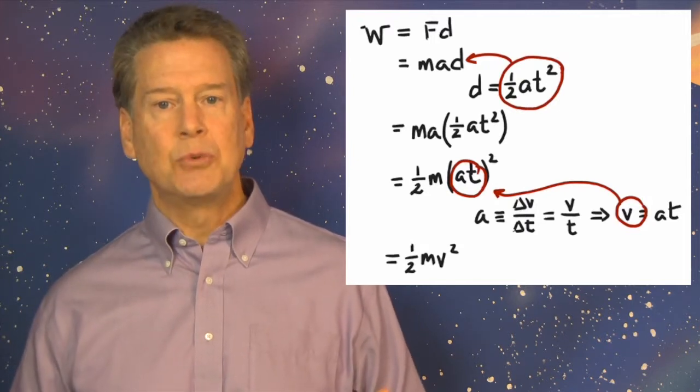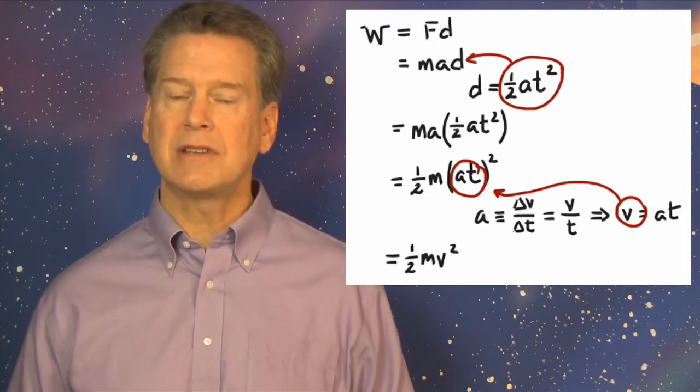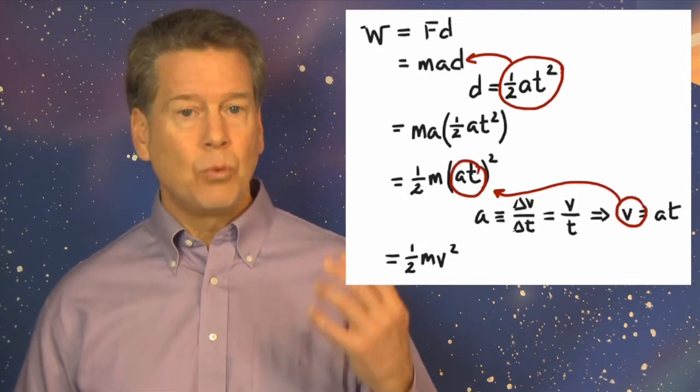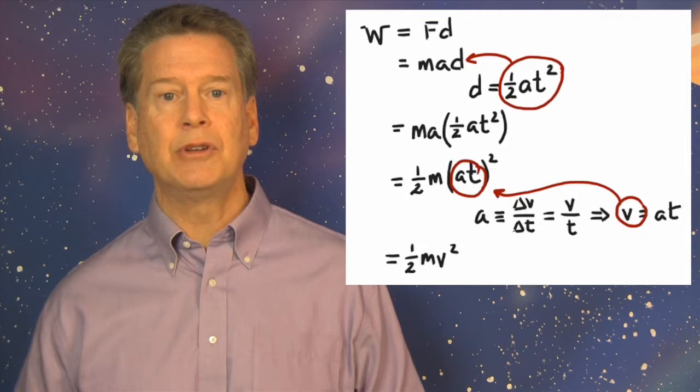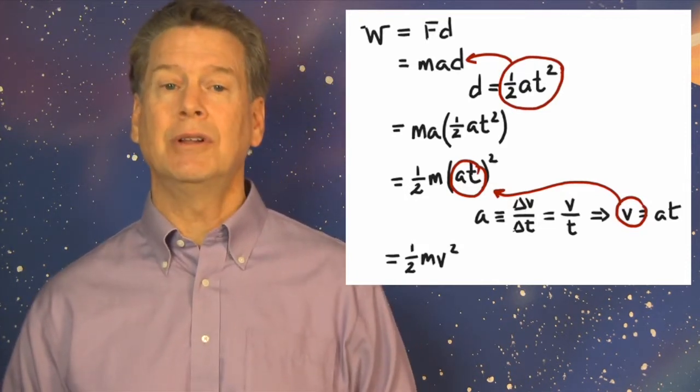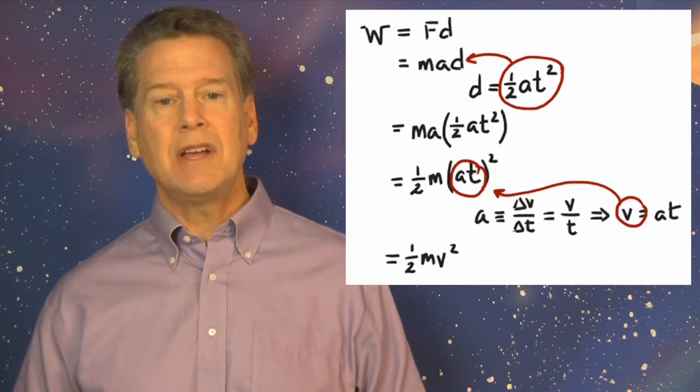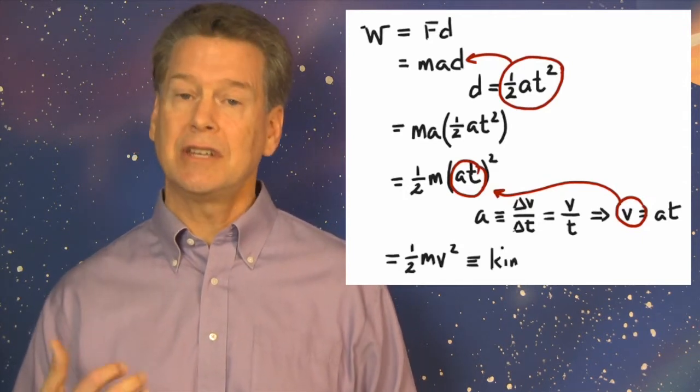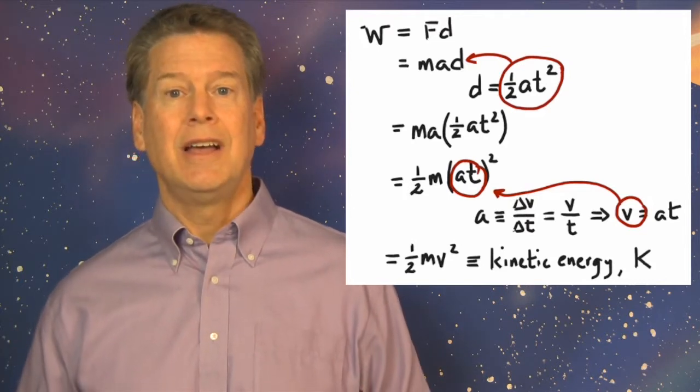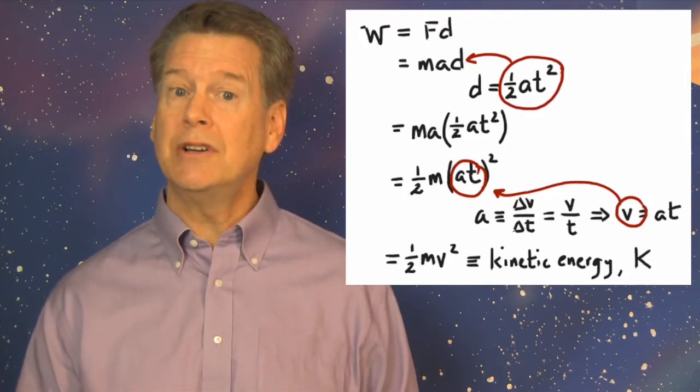This equation says that the work done on a free mass is manifested as speed. This one-half M V squared is so useful in physics that we give it a special name and its own symbol. One-half M V squared is called kinetic energy, capital K, the energy of motion. This is our first form of energy.